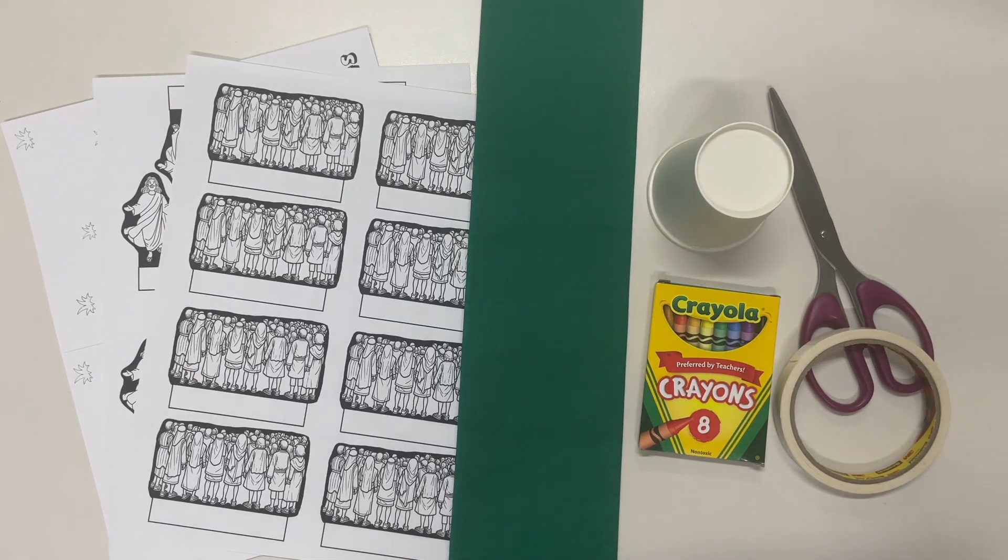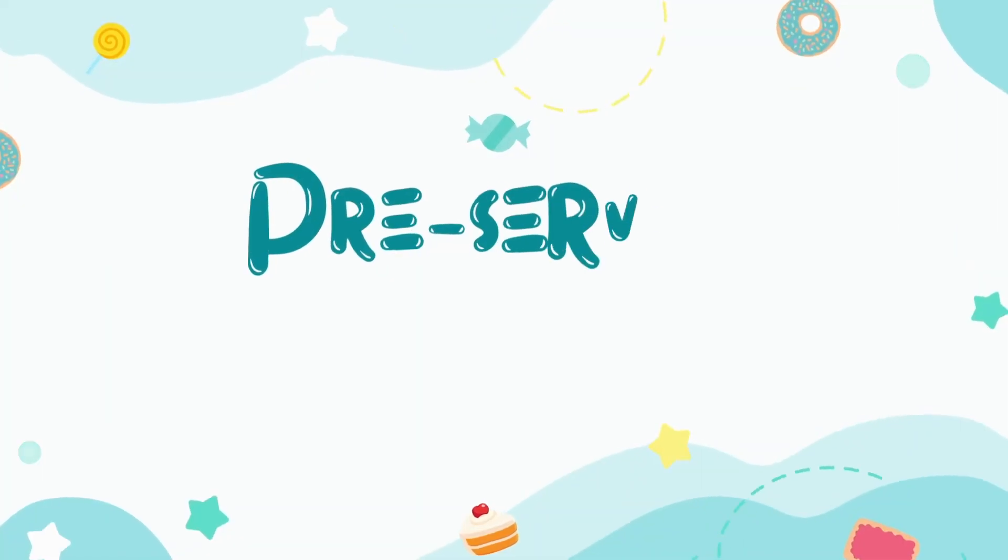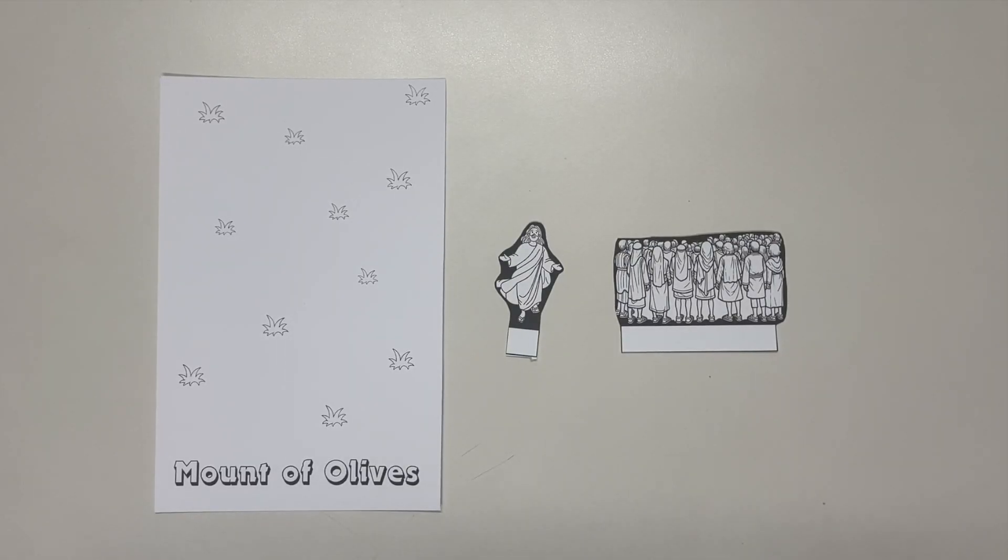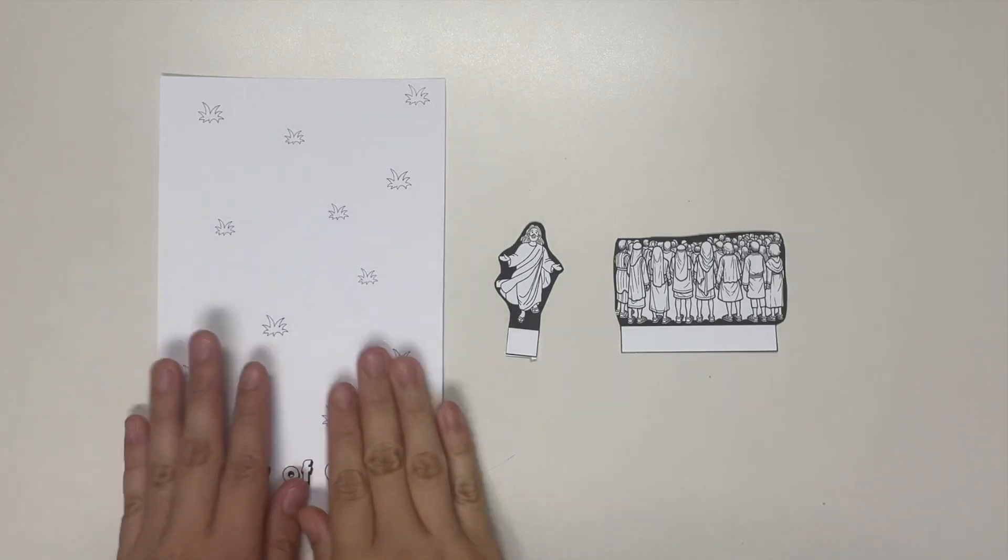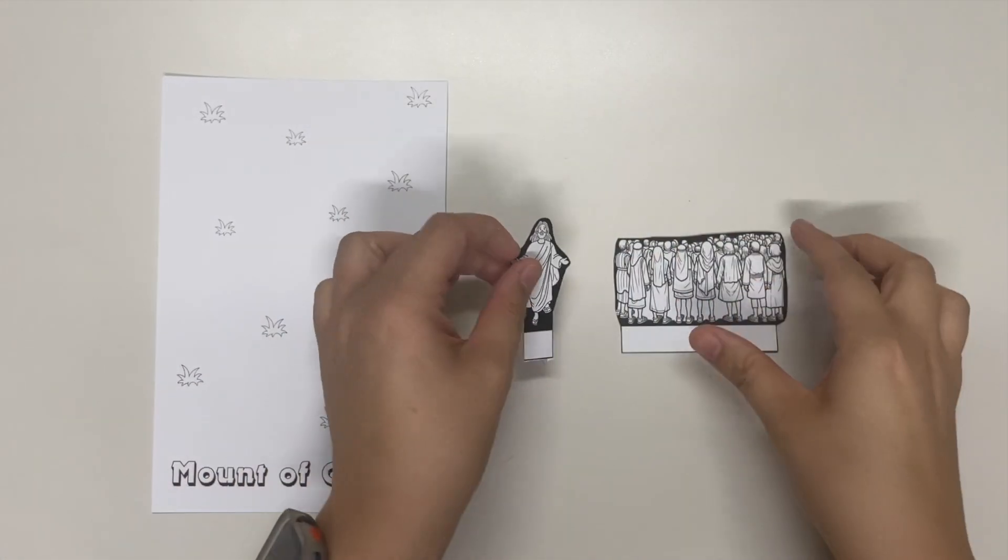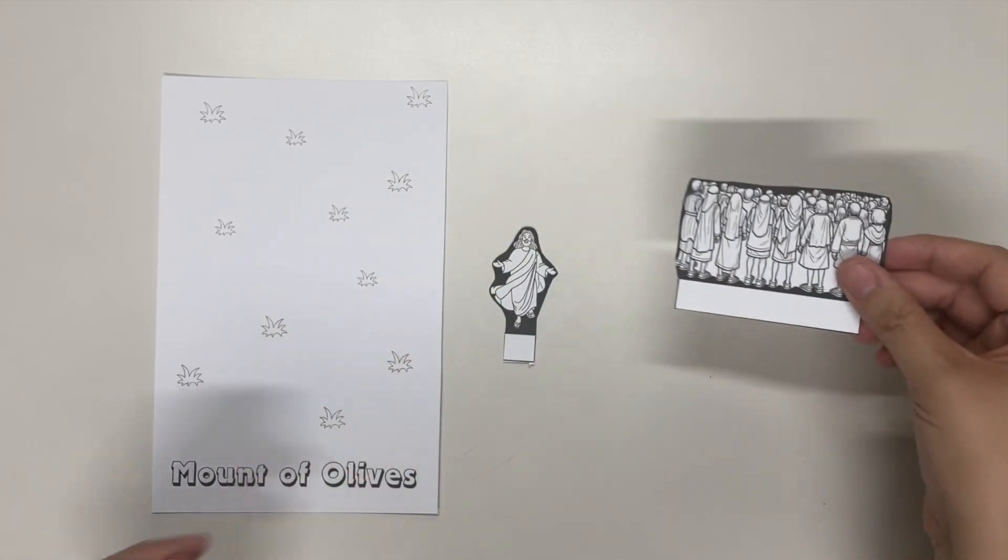Now let's prepare the craft. So first is to cut all the pieces. So we have one base card, one piece of Jesus ascending, and one piece of the crowd.